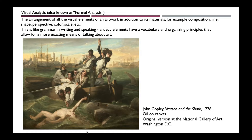Visual analysis is very much like grammar in writing and speaking. These elements are a vocabulary and organizing principles that allow us to talk about objects and artworks in a very detailed, exacting way. You can talk about, well, the line here is doing X, Y, Z; the color is adding to X, Y, Z. Here is a painting by John Copley — Watson and the Shark — a very famous American painter. There are two versions of this painting: one lives in the National Gallery of Art in Washington, DC, and the other in Boston, and I've seen that version in person.